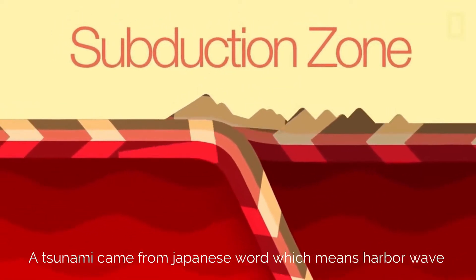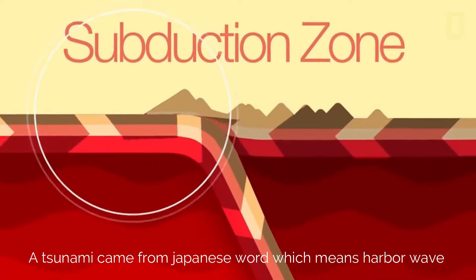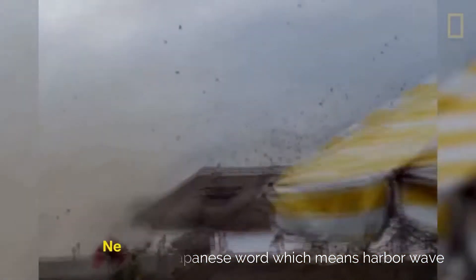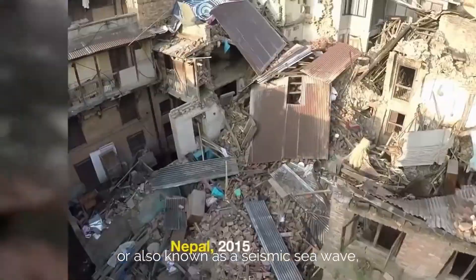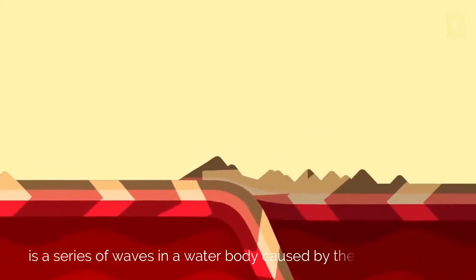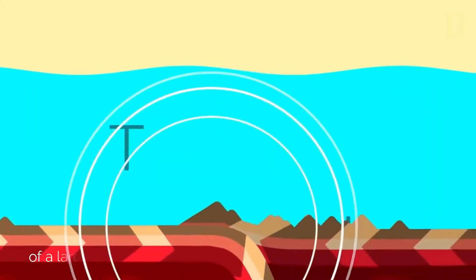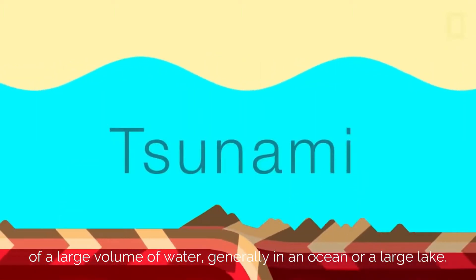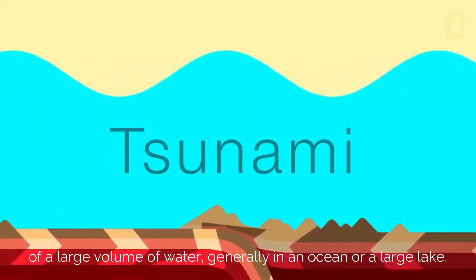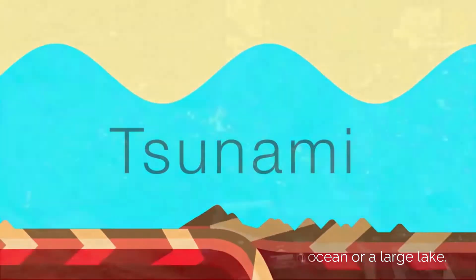Tsunami. A tsunami came from the Japanese word, which means harbor wave, also known as a seismic sea wave. It is a series of waves in a water body caused by the displacement of a large volume of water, generally in an ocean or a large lake.